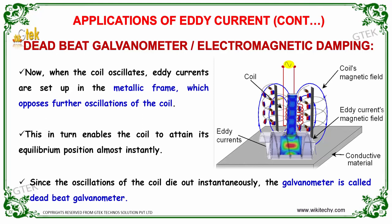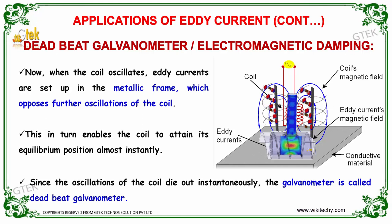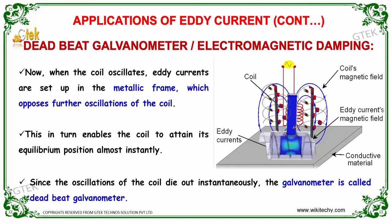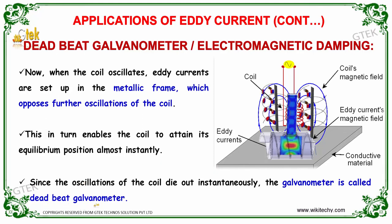Once the coils are rotating in the magnetic field, an eddy current is created. Since the oscillation of the coil dies out instantly, the galvanometer is called a deadbeat galvanometer.